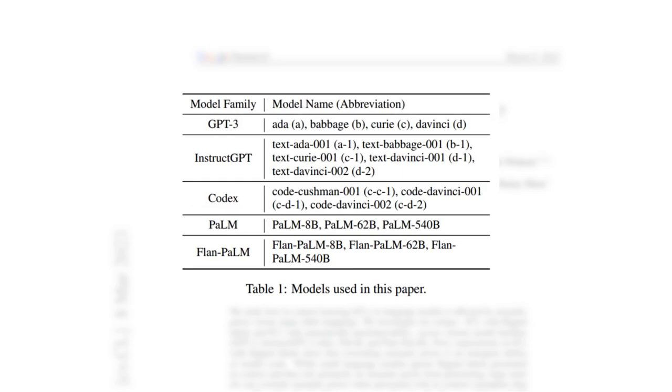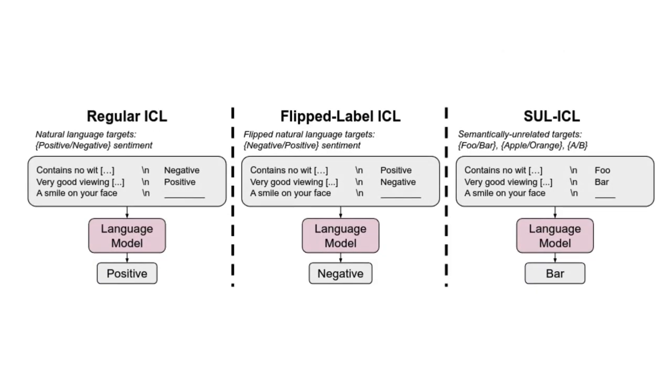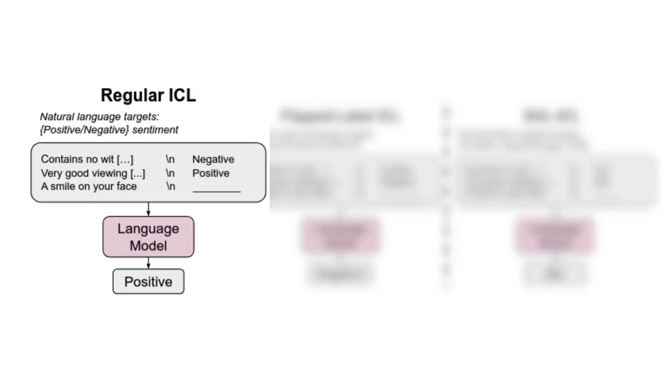Let's see a very concrete example from Google research that ties in with the result we just found out about the input-output mapping not mattering for the in-context learning. The model in question were the whole family of GPT-3, StructGPT, Codex, PaLM, Flan-PaLM, from small to large. There were various tasks that were studied with three main ICL techniques: regular ICL, which involved giving examples with the proper four parameters of an ICL prompt.